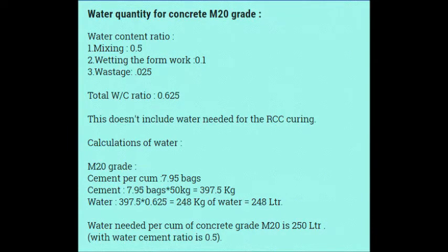Now see the calculations for concrete. In this case, we have taken the water-cement ratio as follows: first, for mixing, I am assuming a nominal mix and taking 0.5 as the water-cement ratio. Then for wetting the formwork — that means certain water will be absorbed into the formwork — I am assuming 0.1, which is approximately 20 percent of the normal water-cement ratio. And for wastage, I have considered 0.025, based on experience. Adding all these: 0.5 + 0.1 + 0.025 = 0.625, which I am calling the total water-cement ratio, or gross water requirement.